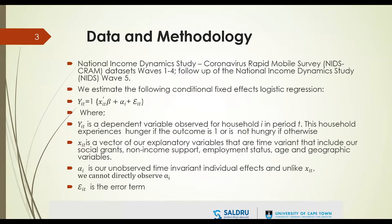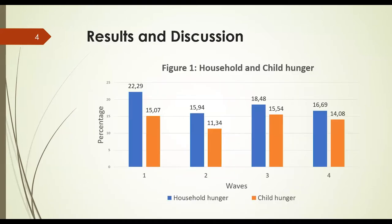We estimate a conditional fixed effects logistic regression where experiencing hunger takes the value of one and zero otherwise. In the first figure we see that household and child hunger were highest in the first wave, at least 22 percent and 15 percent respectively. By the second wave, with the introduction of the SRD grants and top-ups to existing grants, we notice a reduction in household and child hunger.